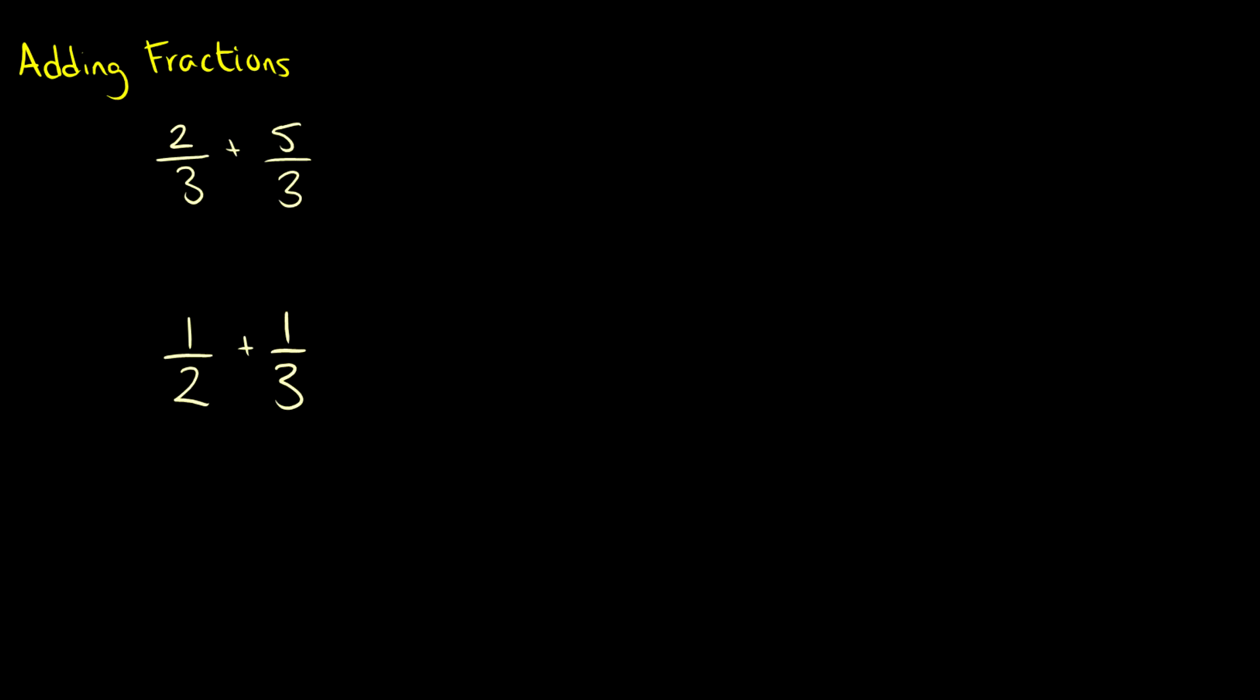What about adding fractions? This is where things can get tricky. So when you have a common denominator then you're good. If we have two thirds plus five thirds because we're adding thirds what we get is two plus five all over three which is just equal to seven thirds. So that's okay because we have the same denominator.